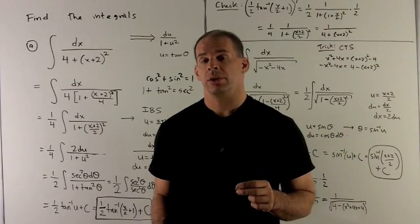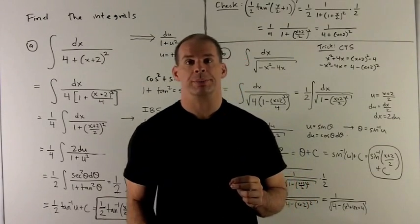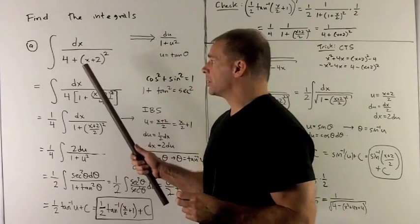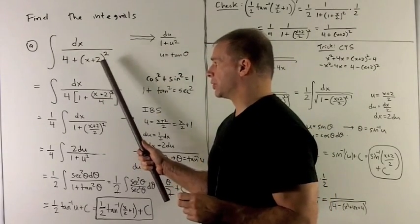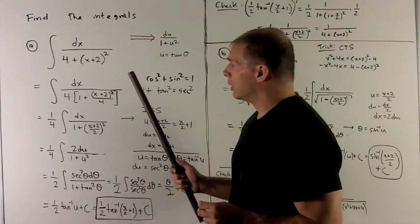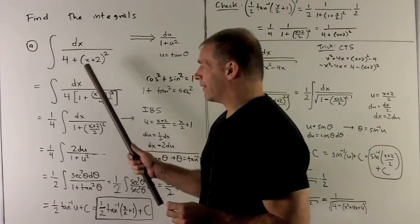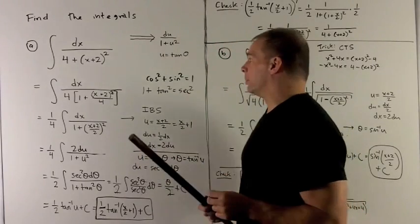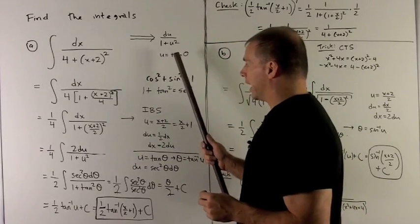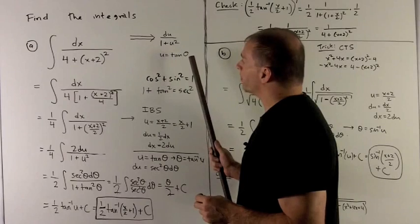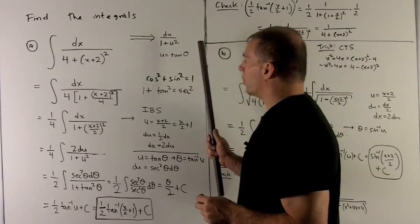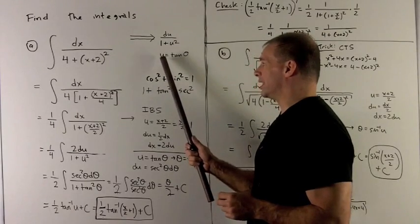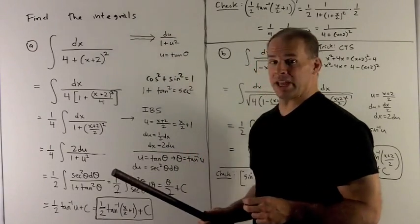Find the following integrals using inverse trig functions. For my first integral, we have integral of dx over 4 plus x plus 2 squared. When I look at this, we should note we have a number plus a quantity in x squared, so that might lead me to believe we're looking at an inverse tangent type problem. So what we would be looking for is this du over 1 plus u squared, and then the substitution is u equal to tangent theta.